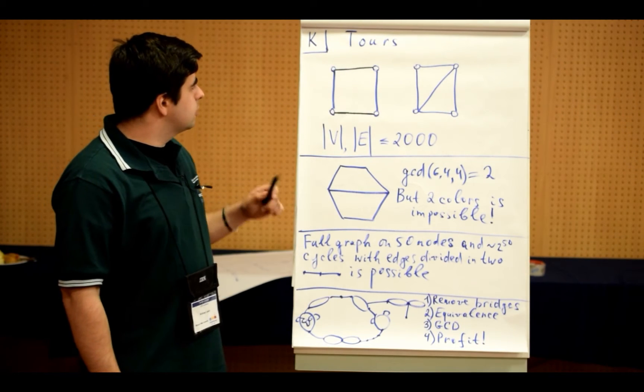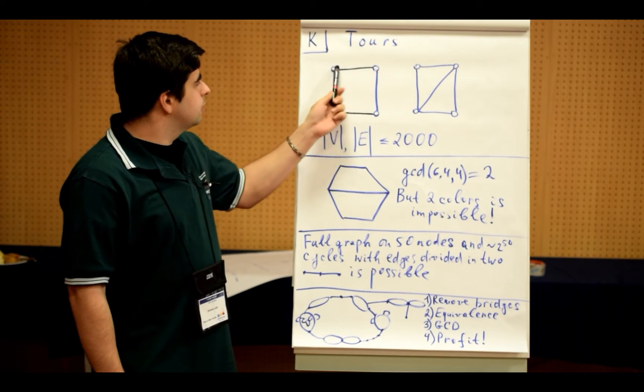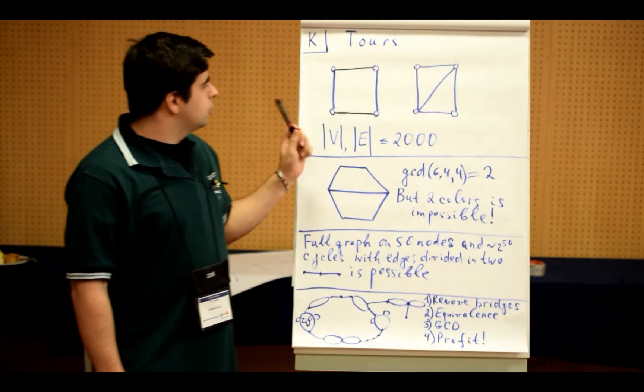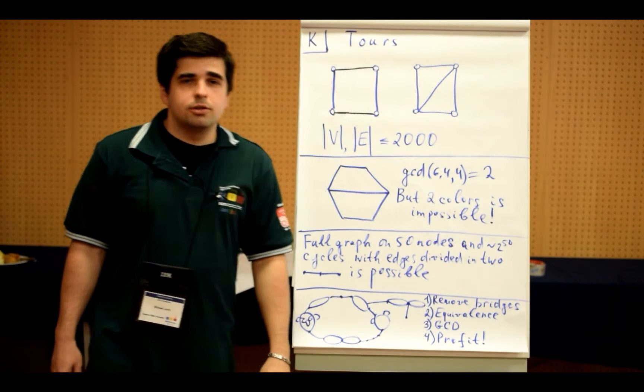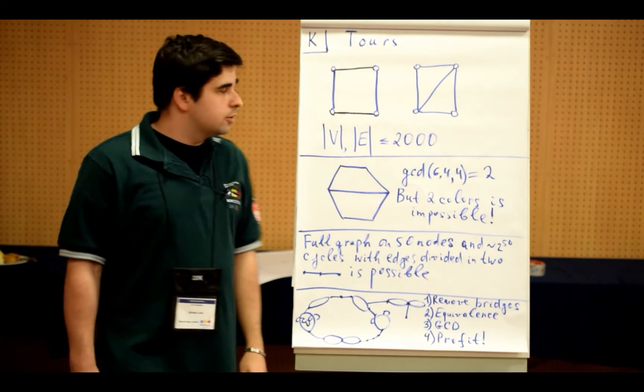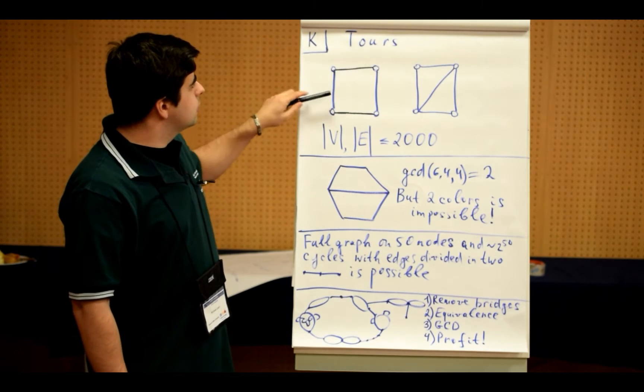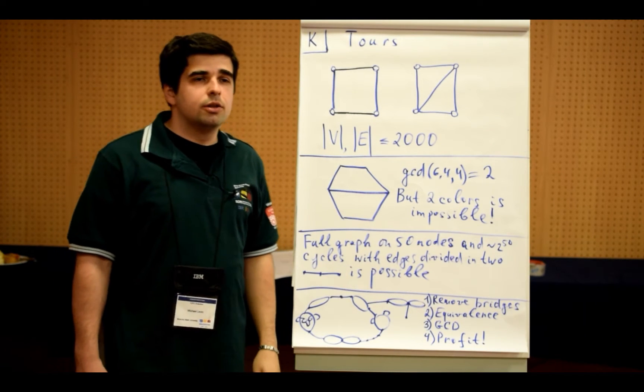The problem statement tells us basically about some graph. We have nodes and edges, and we should color the edges into some number of colors, so that for any cycle in this graph, the number of edges of each color on this cycle should be equal.